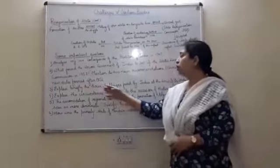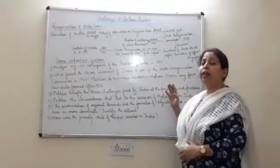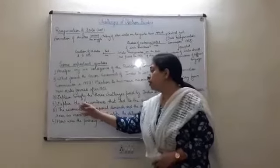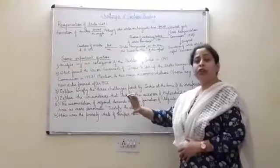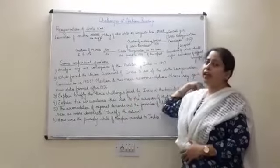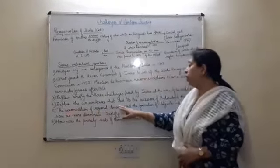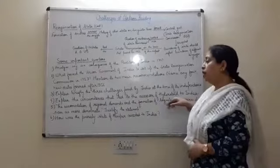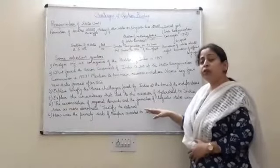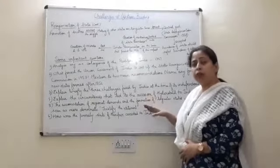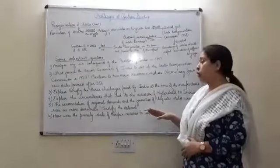Explain briefly the three challenges faced by India at the time of its independence — these are the same challenges explained in the first lecture. Explain the circumstances that led to the accession of Hyderabad to India, dealing with the entire series of events that finally led to Hyderabad joining India. Then, justify the statement: the accommodation of regional demands and the formation of linguistic states were also seen as more democratic — using the formation of Andhra state and showing that linguistic principles helped strengthen the unity of the country.